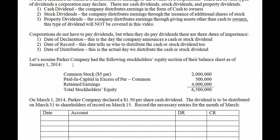Corporations do not have to pay dividends, but when they do, there are three dates of importance. The date of declaration is when the company announces a dividend. The date of record tells us who to distribute the dividend to. And the date of distribution is the actual day we distribute the cash or stock dividend.